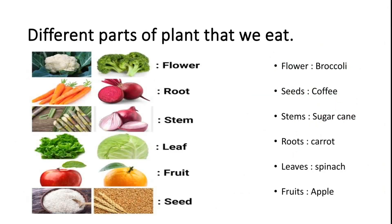Different parts of plants that we eat: we eat the flower — that is broccoli. We eat the seed — that is coffee. We eat the stem — that is sugar cane. We eat the root — that is carrot. We eat the leaves — that is spinach. We eat the fruit — that is apple.